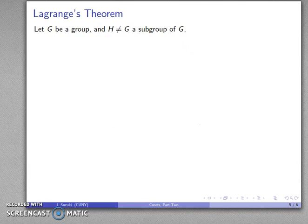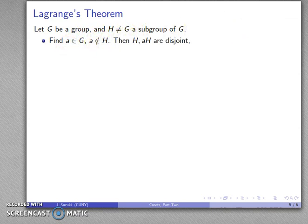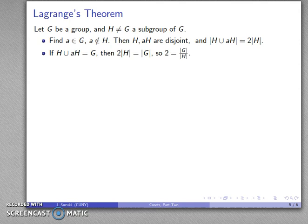This leads to a very important result known as Lagrange's theorem. Let G be a group and let H, not equal to G, be a subgroup of G. If H isn't the entire group, I can find some element not in my subgroup, form the coset, and they are disjoint. Because a subgroup and its coset are the same size, the size of their union is just twice the size of the subgroup. If that union happens to be the entire group, then twice the size of the subgroup equals the size of the group, so |G| / |H| = 2.